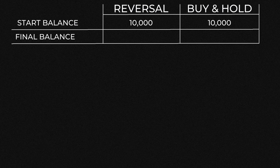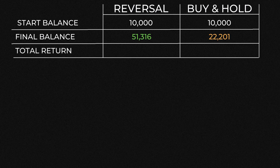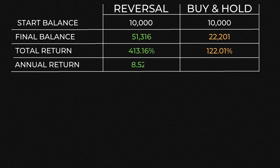Both strategies started with an initial investment of 10,000. At the end of the 20-year period, buy and hold was up to 22,200, while the reversal strategy was on 51,000 — a significant improvement. That is reflected in their returns, with buy and hold bringing in 122% while the reversal strategy brought in 413%. Annualized, buy and hold returned just over 4% per year, while the reversal strategy was more than double that at 8.5%.